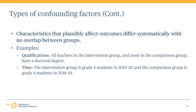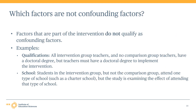The WWC considers characteristics like teacher qualifications or time periods to be confounding factors only when there is no overlap in the characteristic between the intervention and comparison group. So, if even one comparison group teacher also had a doctoral degree, the WWC would not consider the doctoral degree qualification to be a confounding factor. It is also important to note that apparent confounding factors only qualify as such when they are not part of the intervention — for example, if an intervention requires teachers to have certain qualifications, or a study examines attending a specific type of school like a charter school, these are not considered confounding factors.